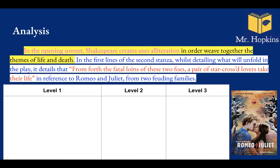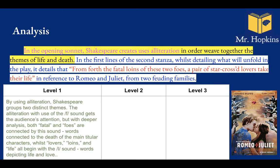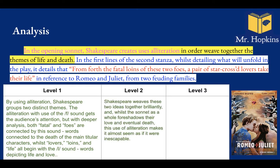If you look at those lines, what alliteration can you see? I see two pieces: first with F, and second with L. By using alliteration, Shakespeare groups two distinct themes. The F sounds — 'fatal' and 'foes' — carry negative connotations; they make me think of death and fighting. Whereas the L sounds — 'lovers,' 'loins,' and 'life' — are very positive and depict life and love. This example is from a student moving up to level two: Shakespeare weaves these two ideas together brilliantly, and the alliteration makes fate seem almost inescapable, developing the theme of fate in the play.